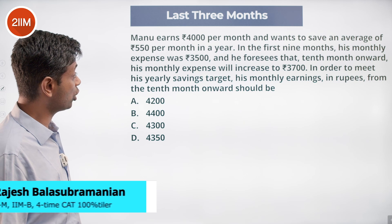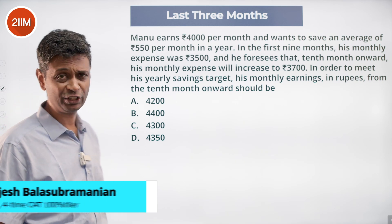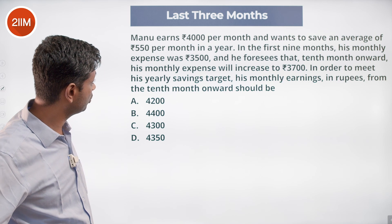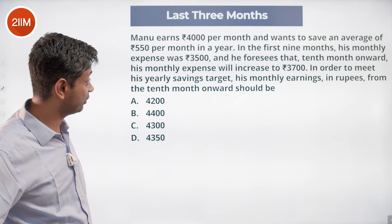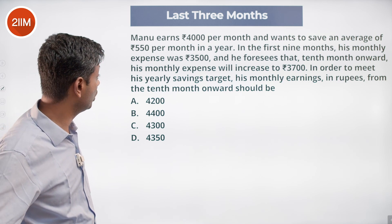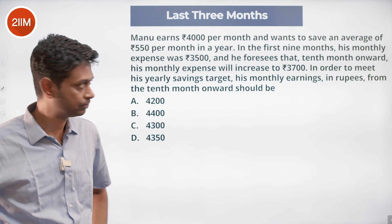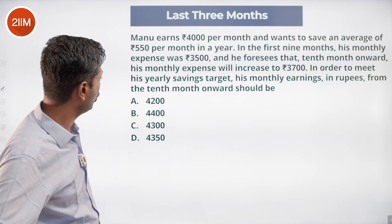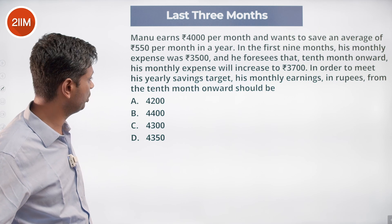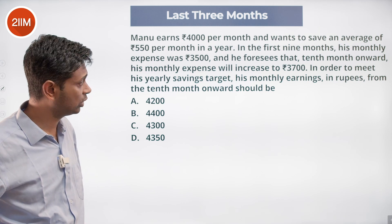Manu earns 4,000 per month and wants to save an average of 550 per month in a year. In the first nine months his monthly expense was 3,500. He foresees that from the 10th month onwards his monthly expense will increase to 3,700. In order to meet his yearly savings target, his monthly earnings from the 10th month onwards should be?